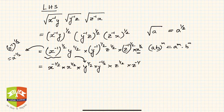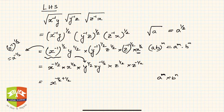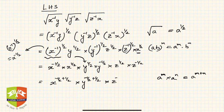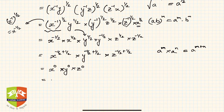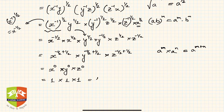This step gives us x to the power (minus half plus half), because the rule a^m × a^n = a^(m+n) applies. Similarly y is (minus half plus half), and z is (minus half plus half). Simplifying, we get x to the power 0, times y to the power 0, times z to the power 0. Since anything to the power 0 is 1 for positive real numbers, and x, y, z are all positive real numbers, this equals 1 × 1 × 1 = 1, which equals the RHS. Hence proved.